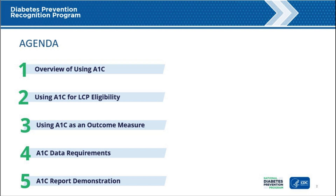This webinar serves as an overview on the use of A1c values within the National DPP. As part of today's webinar, we will introduce the two main uses of A1c within the program. Number one: how to use A1c to determine Lifestyle Change Program, or LCP, eligibility.